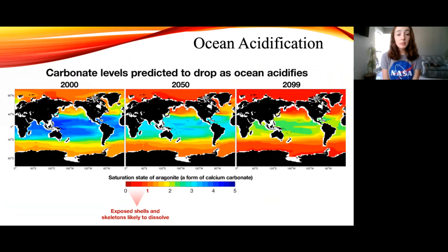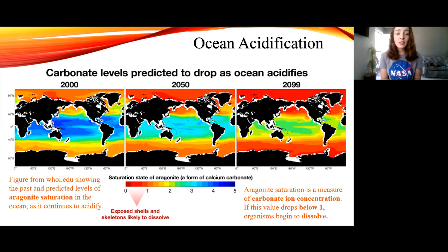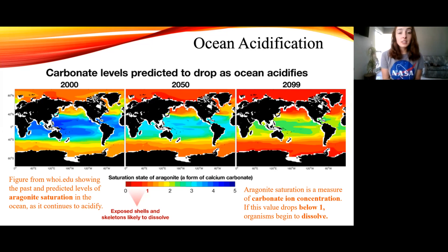Lastly, I want to show you these graphs of carbonate levels in the year 2000 and projected carbonate levels for 2050 and 2099. The colored bar at the bottom is the legend showing aragonite saturation state. Aragonite is a mineral with the formula calcium carbonate — just like calcite, but a different crystal structure. This aragonite saturation measurement is basically a measure of the carbonate ion concentration. As noted on the bottom right, exposed shells are likely to dissolve anywhere from zero to one on the aragonite saturation scale — that's the level at which carbonate ion concentration drops so low that calcium carbonate won't form and existing calcium carbonate dissolves. That's the red part of these graphs, and you can see it getting increasingly red as years go by. The projection for 2050 and 2099 is honestly just terrifying.